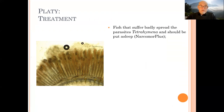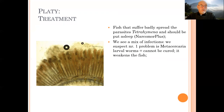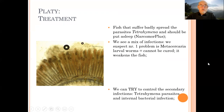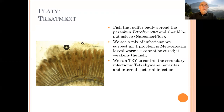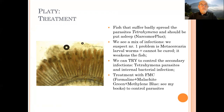The fish that suffer so badly from Tetrahymena should be put to sleep, because when the fish dies in the aquarium the parasites will jump off and look for other hosts, other fish — they will leave like rats from a sinking ship. When we see this mix of infections, we suspect that problem number one is the metacercaria, the larval worms, and they cannot be cured. It weakens the fish, so the weak fish should be put to sleep as they have no chance of recovery. You can try to control the secondary infections — the Tetrahymena parasites and internal bacterial infections. Tetrahymena can be treated with FMC — that really works well. That's formalin, malachite green, and methylene blue to control the parasites.